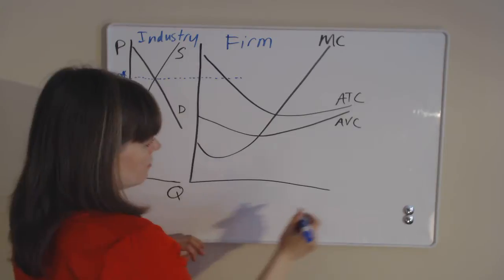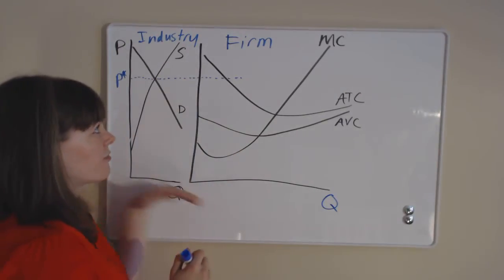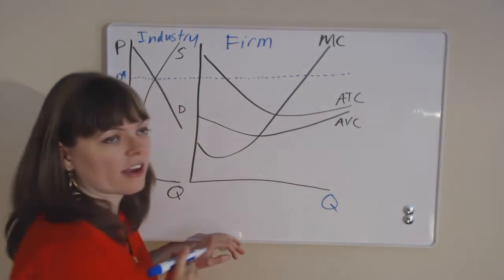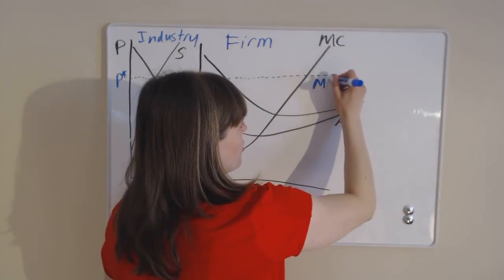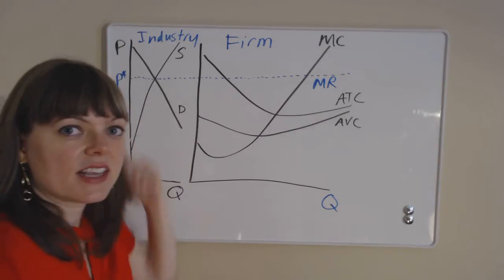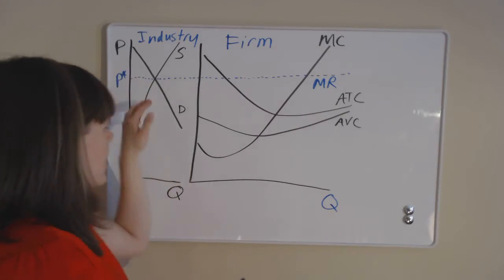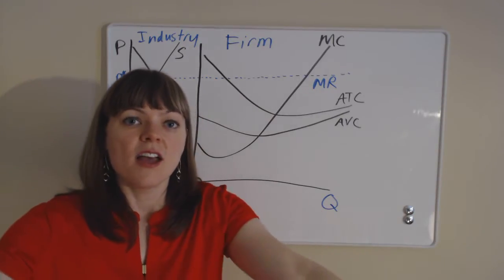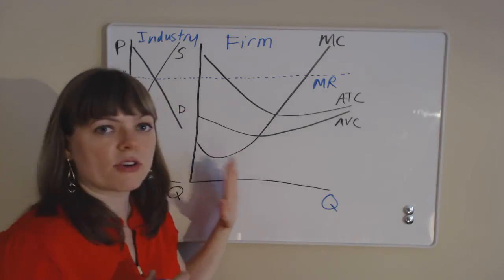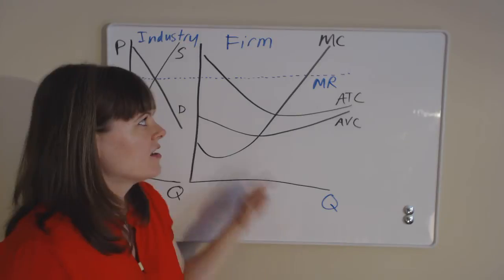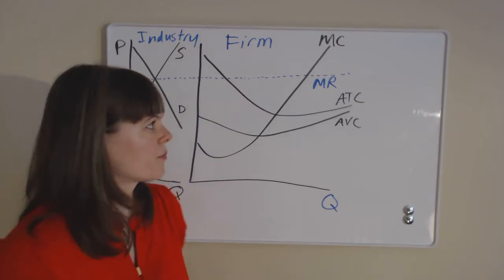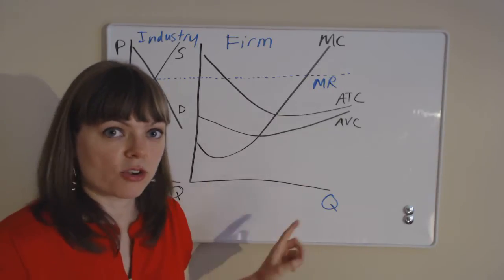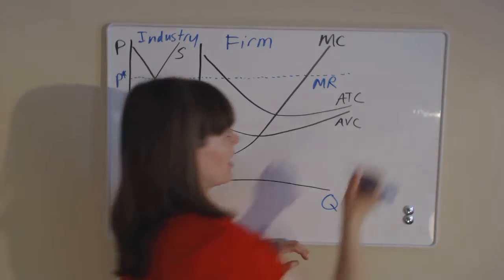Both the industry and firm graphs are labeled with quantities on the x-axis. If we project the market price over to the firm's cost curve diagram, we get marginal revenue for that particular firm. Why is the industry price equal to marginal revenue? If the price is twenty dollars, marginal revenue just means revenue brought in — for every unit they produce, they sell it for twenty dollars, so twenty dollars is their marginal revenue. Next, we need to figure out how many units this firm will produce using the golden rule in economics.